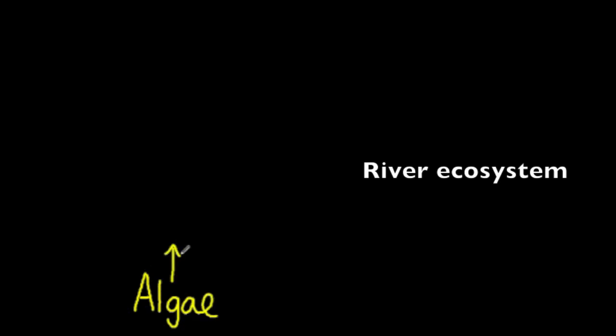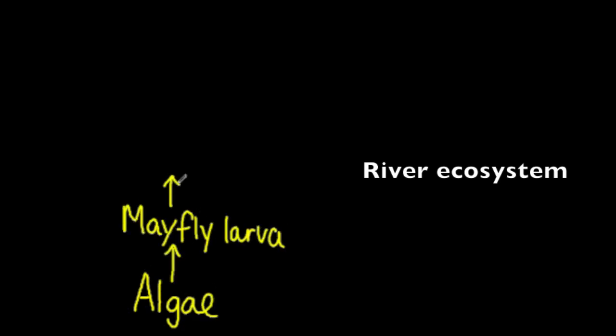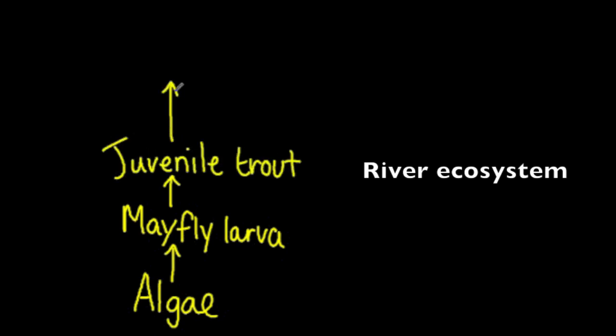The second example is for a river ecosystem. Here the algae are eaten by mayfly larvae. The mayfly larvae are eaten by juvenile trout. The juvenile trout are then eaten by kingfishers.